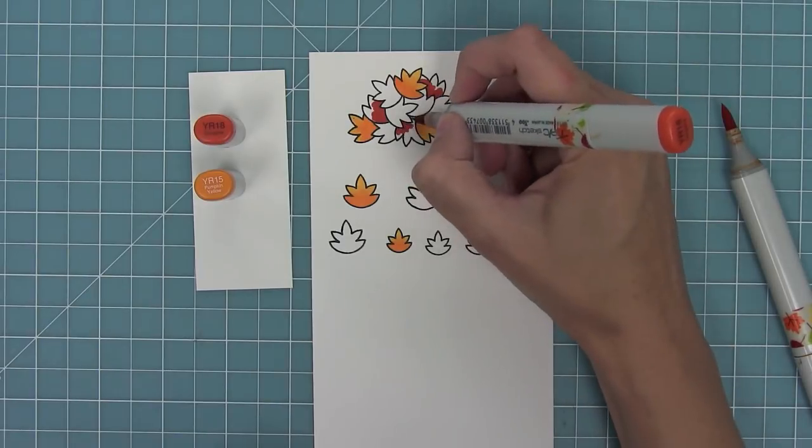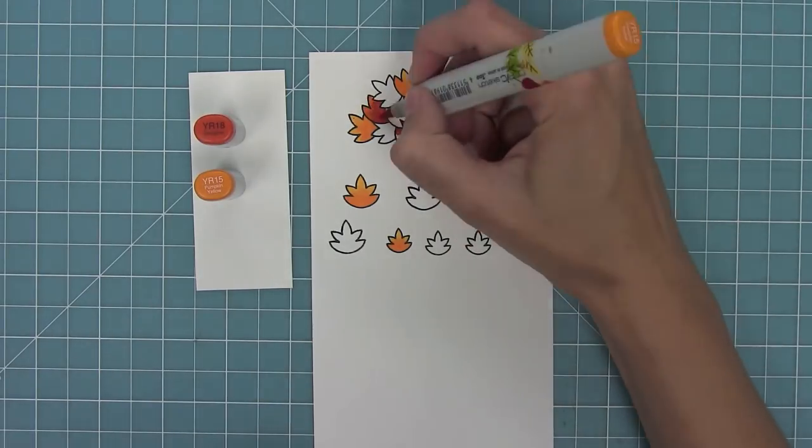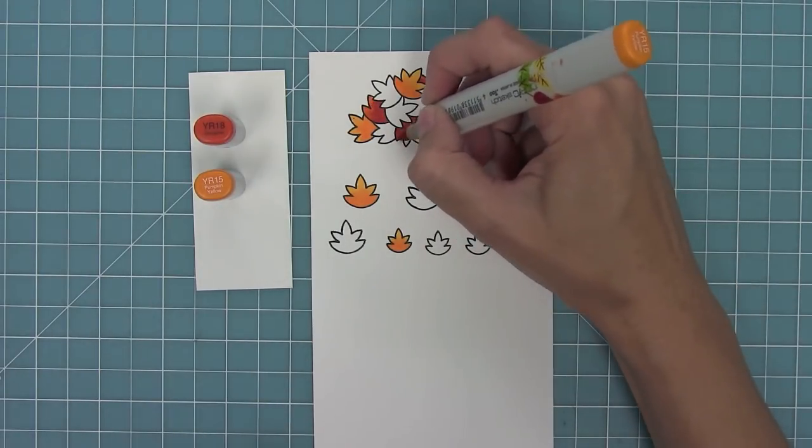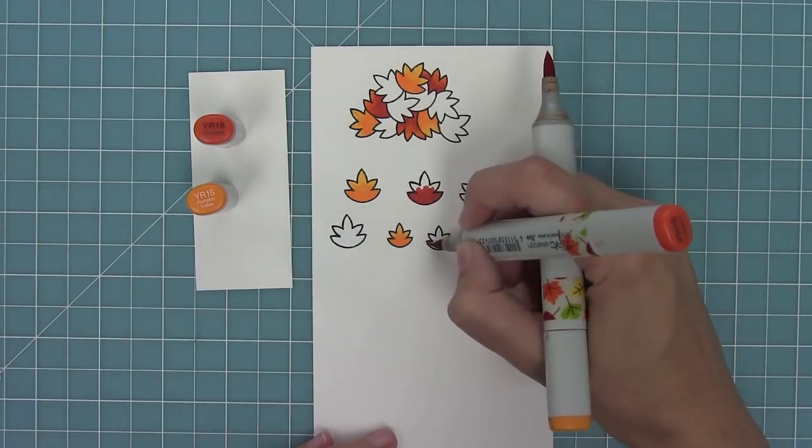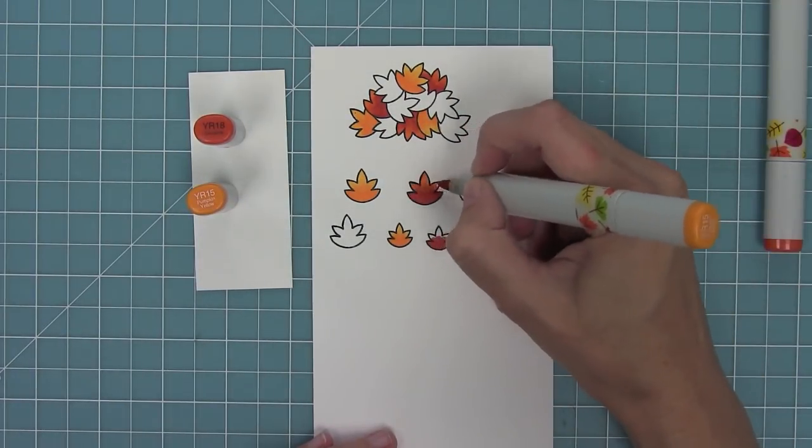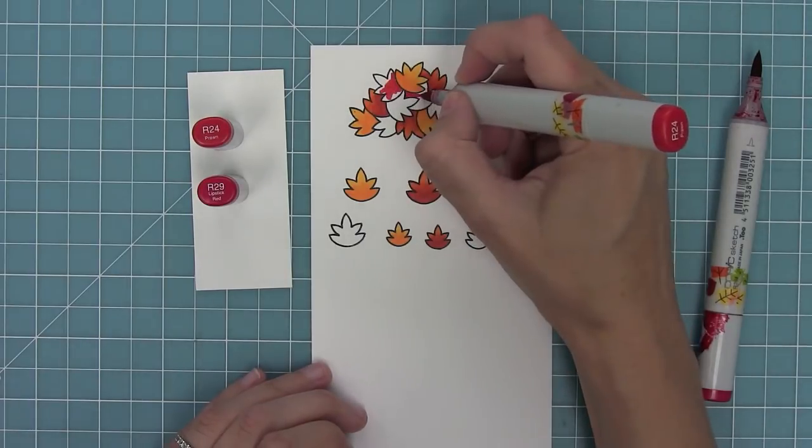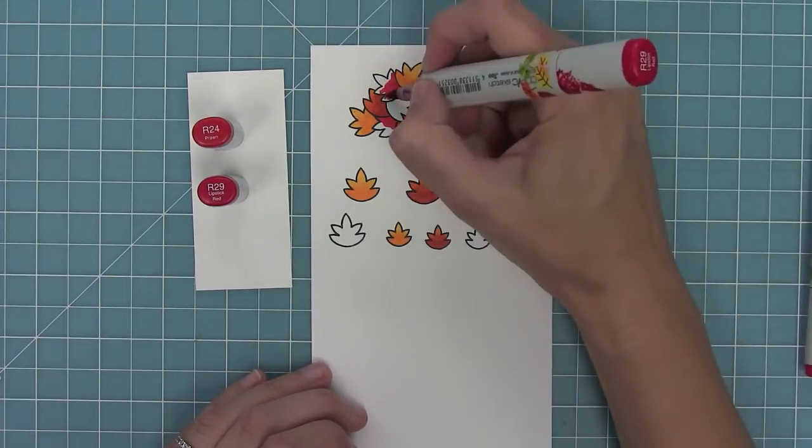Next I'm working with a darker orange, laying down my darkest marker first and then blending that out with my lightest marker. I'm adding the darkest marker where there's leaves overlapping to show the shadow of those leaves, and then I'll color in the individual leaves with these same markers.